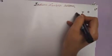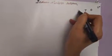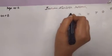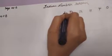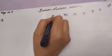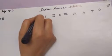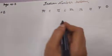Ones, tens, hundred, thousand, ten thousand, lakh, ten lakh, crore and ten crore.